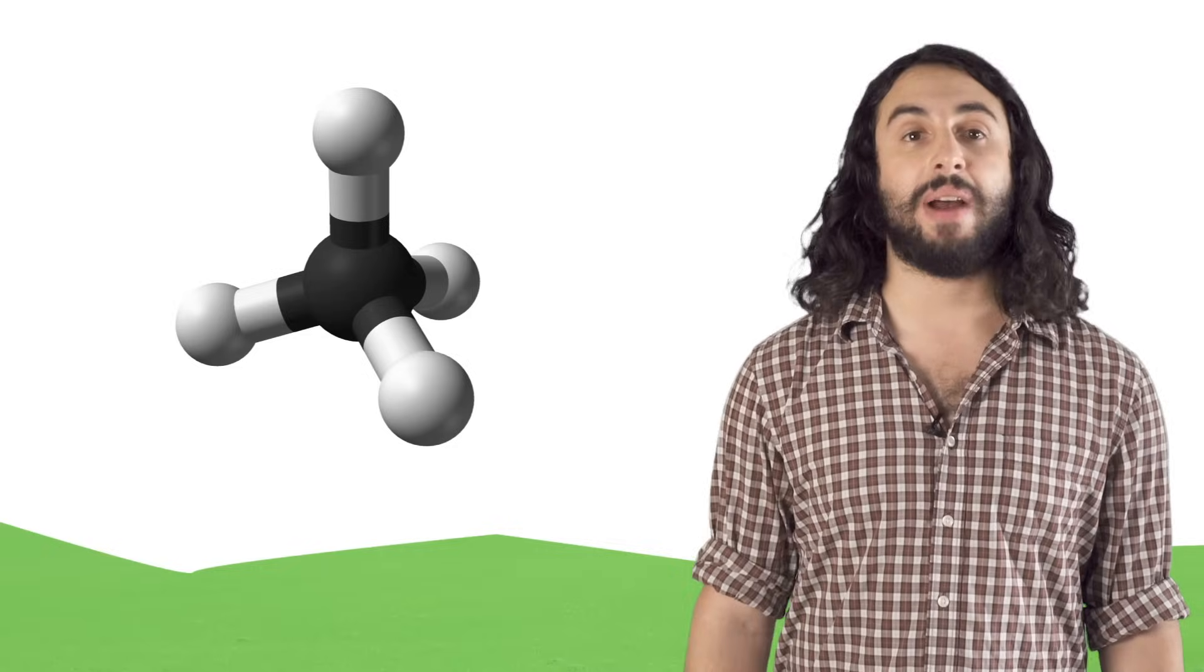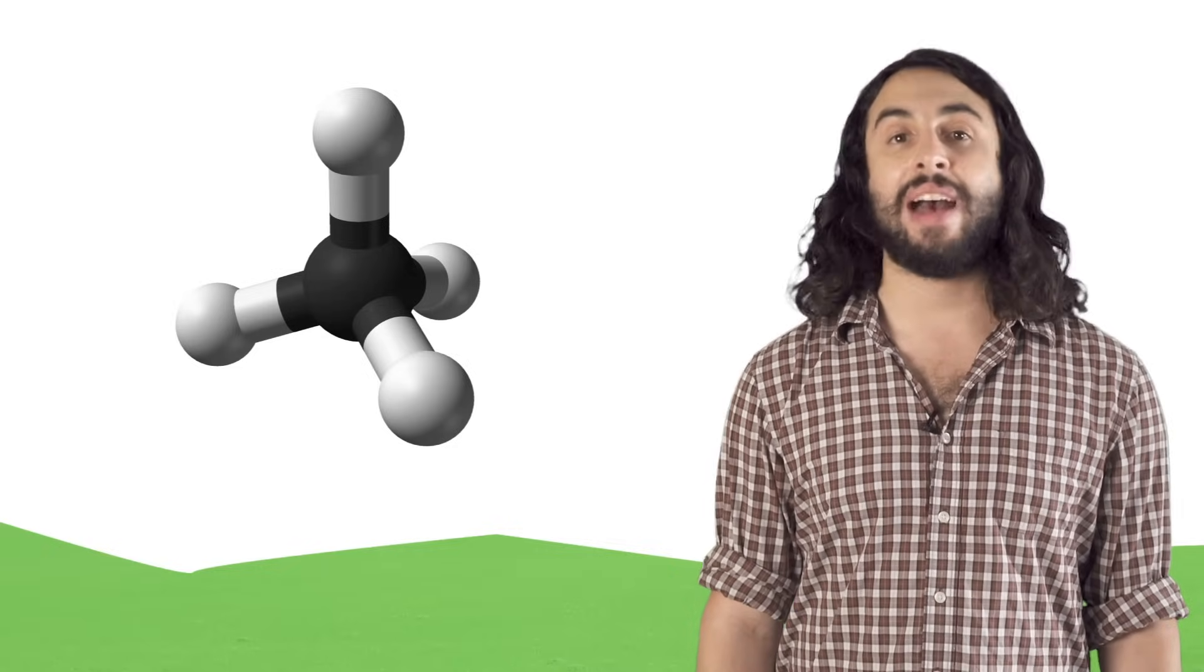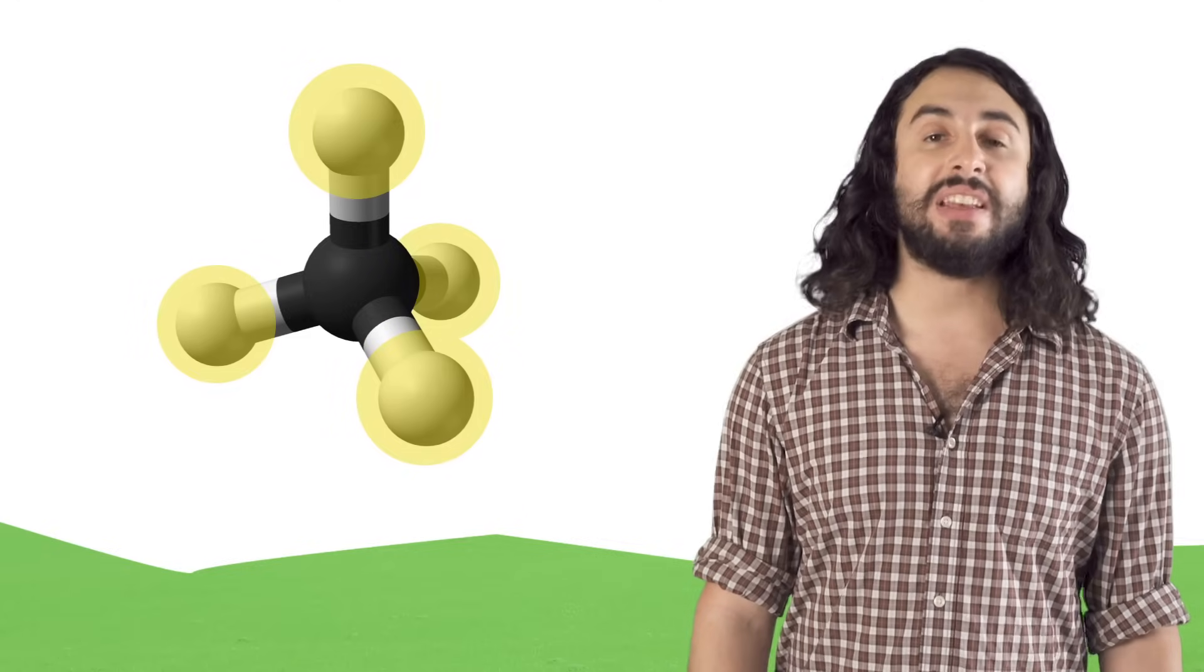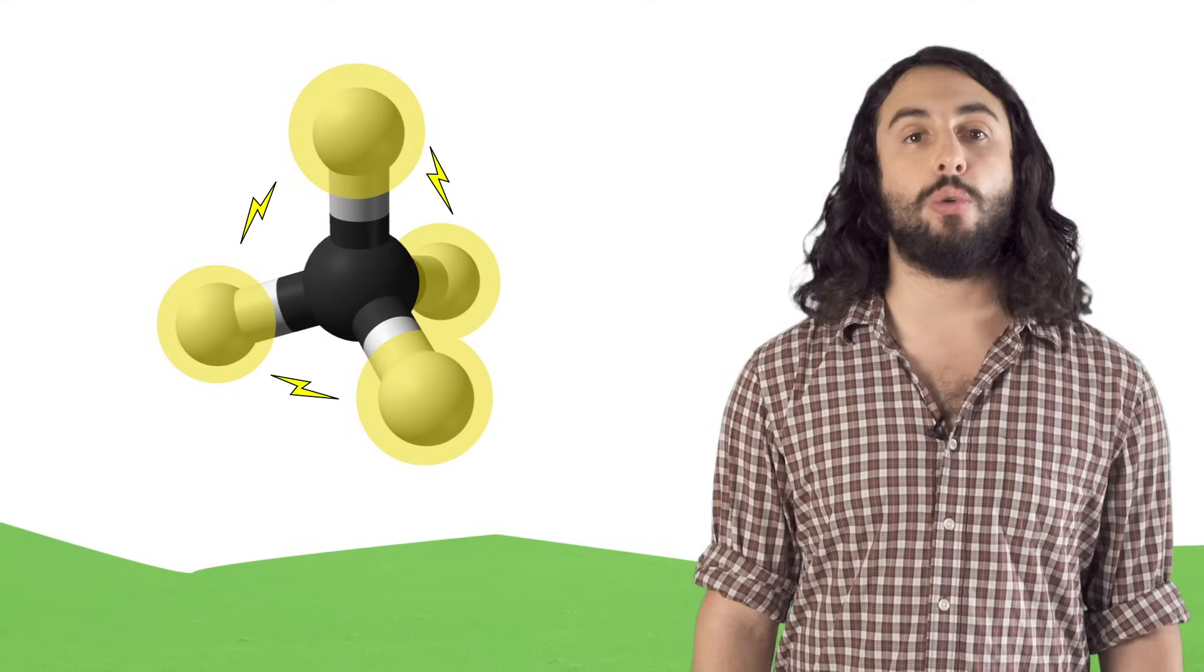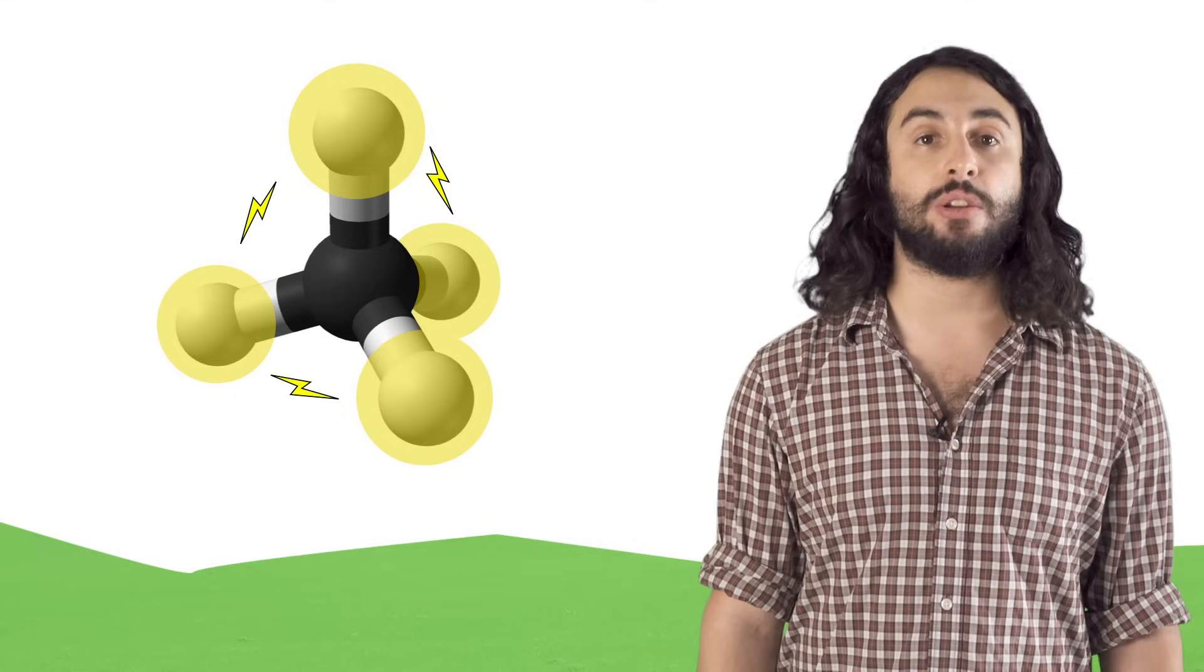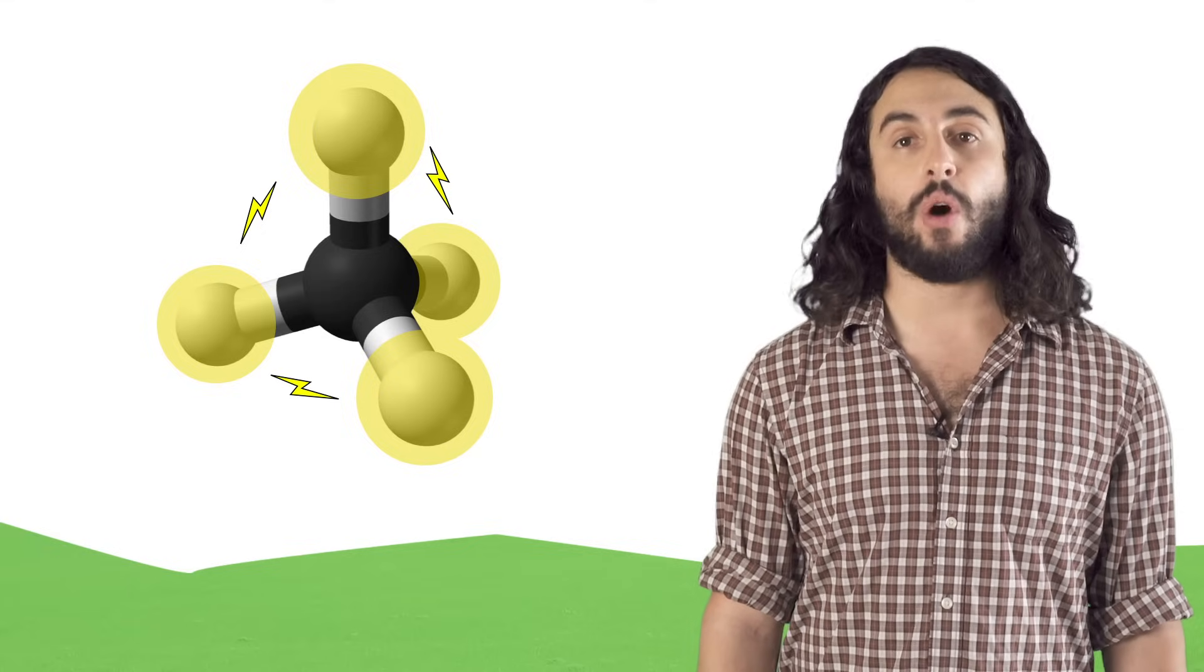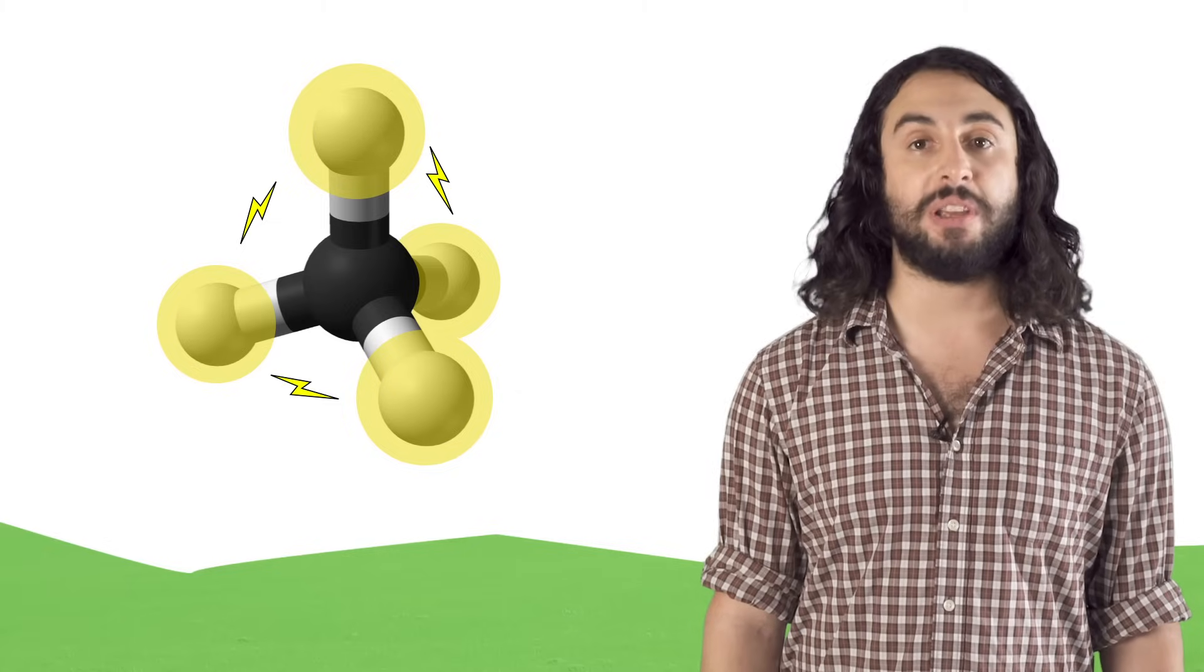Atoms are surrounded by clouds of negatively charged electrons, and when you have atoms in a molecule together, these electron clouds repel each other. Because of this, a molecule will automatically adopt a particular geometry so as to allow all the atoms to be as far away from each other as possible.